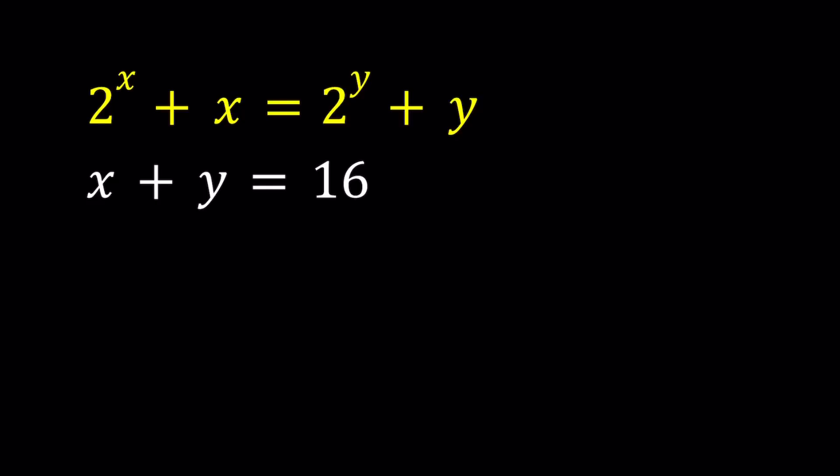Let's start with something that wouldn't work. Why do I show you that? Because sometimes you need to see methods that don't work. Let's go ahead and isolate y from the second equation. We get y equals 16 minus x. Let's replace the y with that in the first equation. That gives us 2 to the power x plus x equals 2 to the power 16 minus x plus 16 minus x.